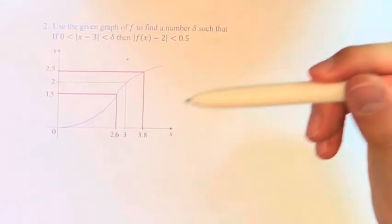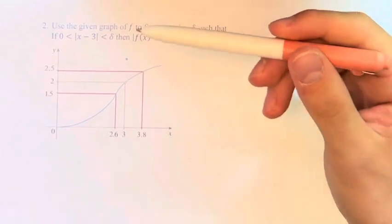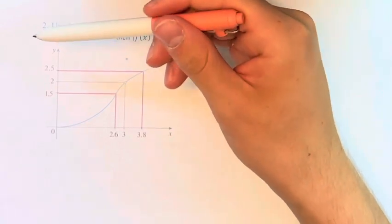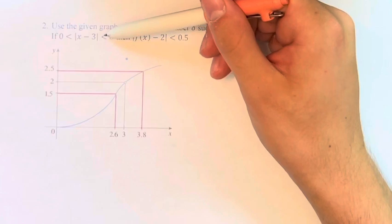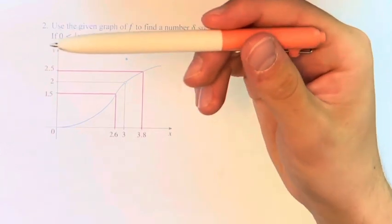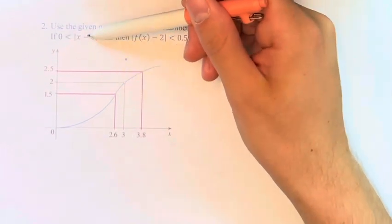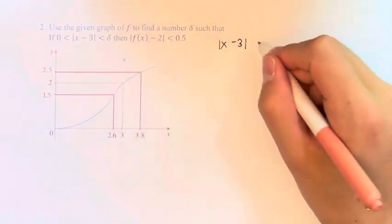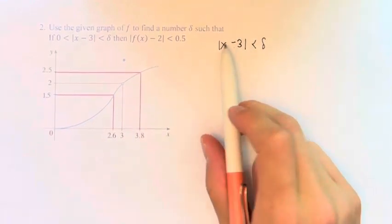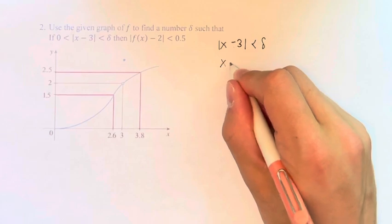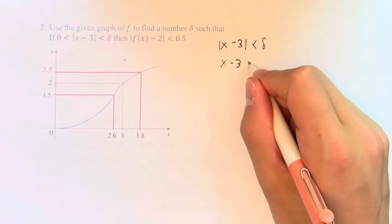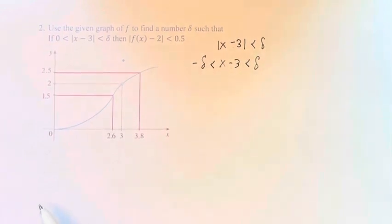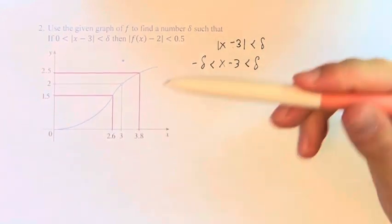So the first thing that we can note is that we have this 0, right? We're saying that 0 is less than the absolute value of x minus 3 is less than delta. This is saying that the absolute value of x minus 3 is less than delta. This means that the magnitude of this is less than delta, which means that x minus 3 is less than delta and greater than negative delta. It falls within this range.